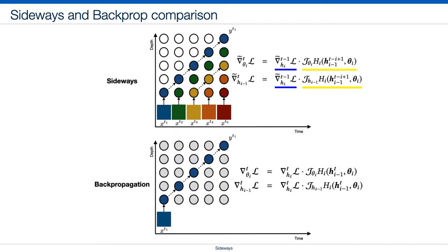Backprop computes gradients with Jacobians using the same frame. Sideways approximates gradients by combining them with Jacobians of activations originating from different frames.